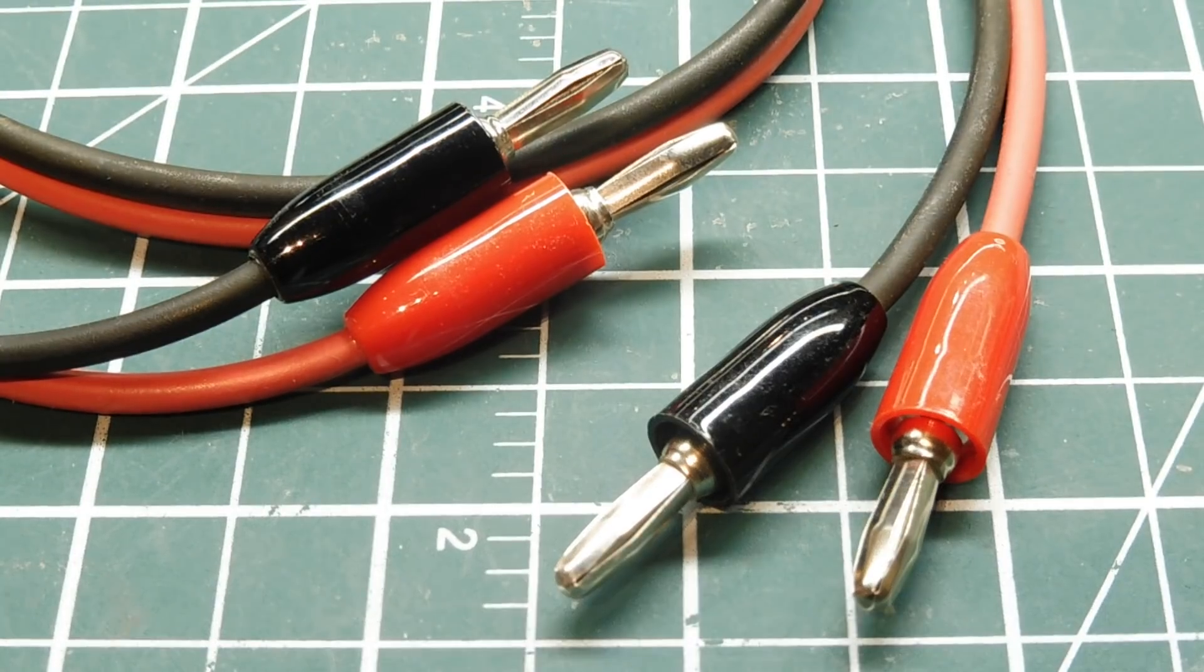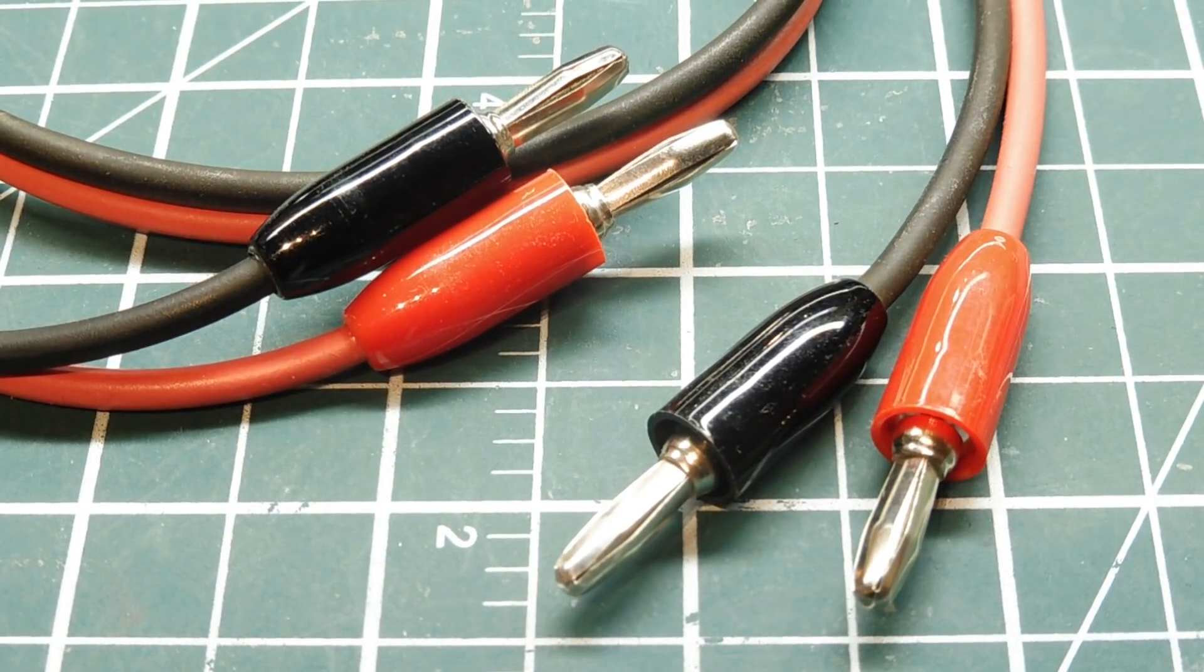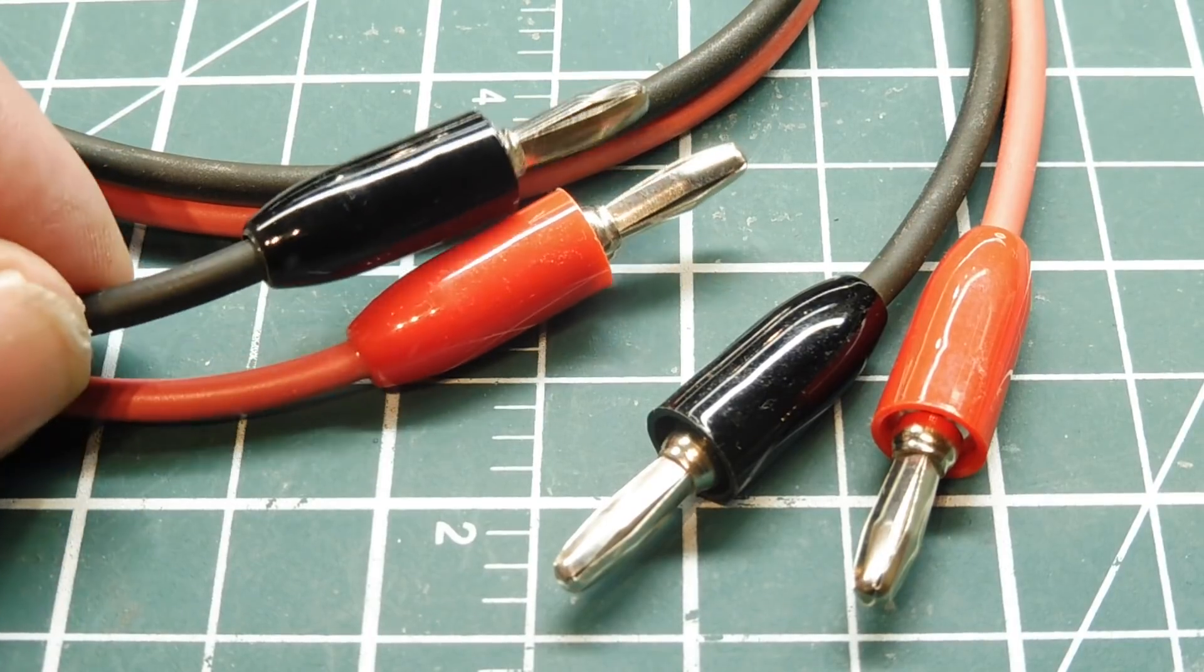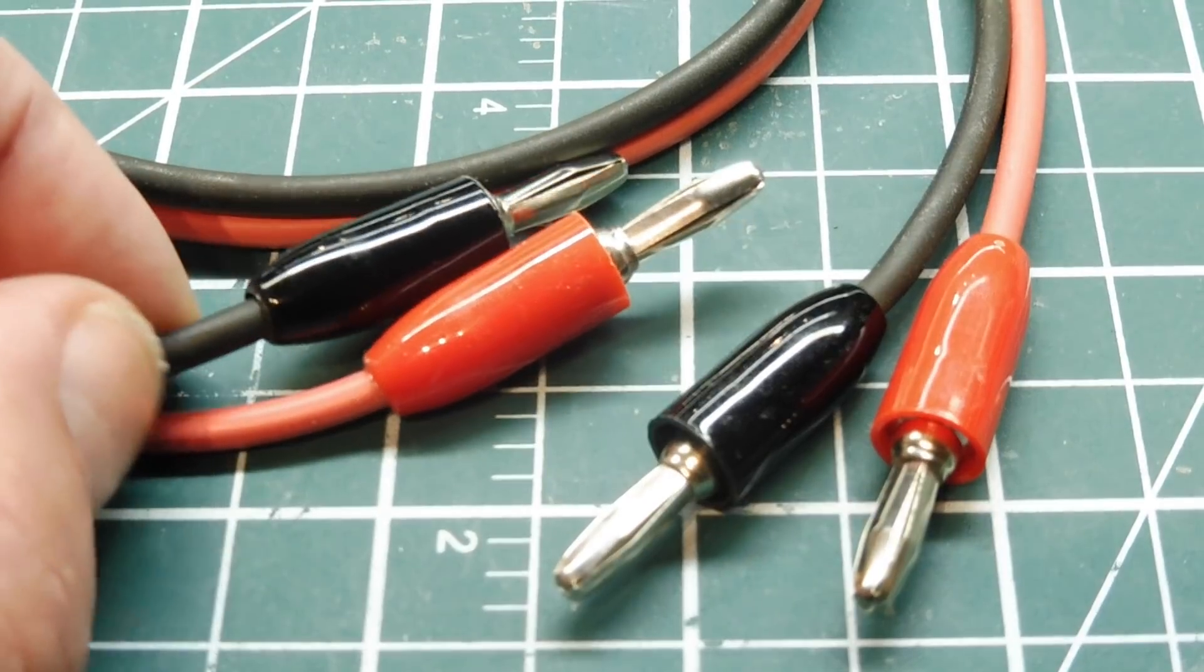The last connector that we're going to look at is the banana connector. It's very popular. It's used in meter leads, test leads. It's used in a lot of applications. This is test lead wire. You can get it in black and red, and it has a soft rubber outer coating.